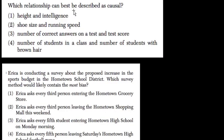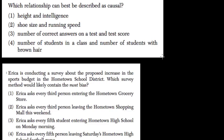Here we have a question that says, which relationship can be described as causal? Causal refers to the word cause. This means which of the relationships here imply that one of the things causes the other. That's what a causal relationship is.